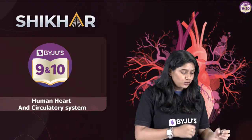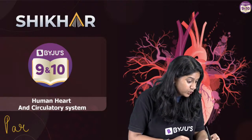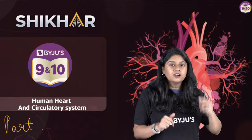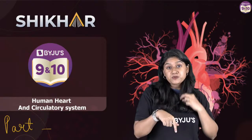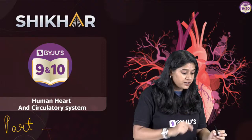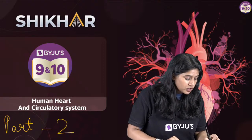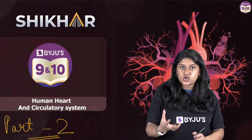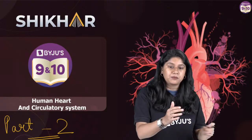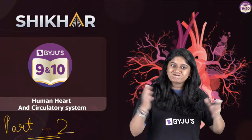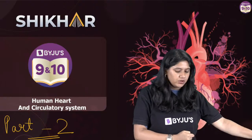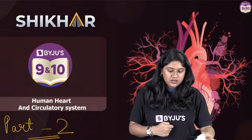So it's Part 2. In the future if you are watching this video, we had a Part 1 — there's a link in the description box, please click on that and watch Part 1. In Part 1 we discussed about the structure of the human heart, and in Part 2 we will be discussing about the circulatory system — specifically the double circulation in detail.